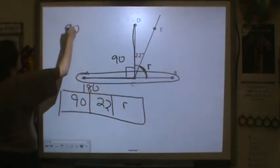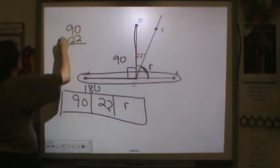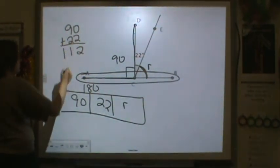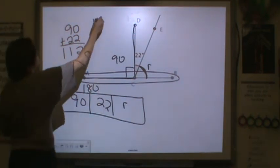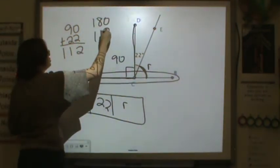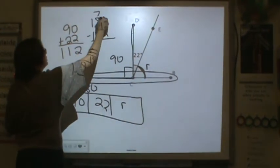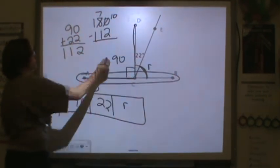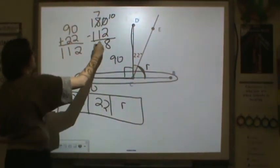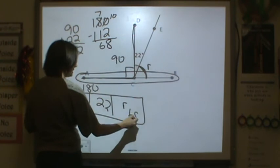So if I put 90 and 22 together, I can see what is left for me to subtract from 180 to get to R. So we've got 2 from 10 is 8, 1 from 7 is 6. So R is equal to 68.